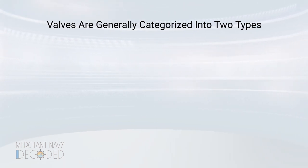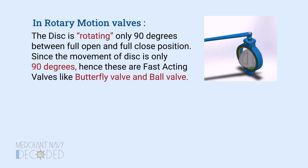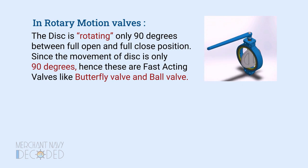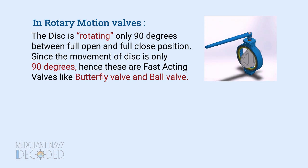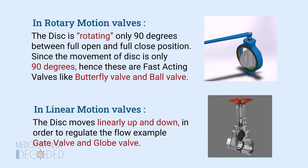Valves are generally categorized into two types: rotary motion type and linear motion type. In rotary valves, the disc rotates only 90 degrees between full open and full close position. Since the movement of the disc is only 90 degrees, these are fast-acting valves like butterfly valve and ball valve. In linear motion valves, the disc moves linearly up and down in order to regulate the flow — for example, gate valve and globe valve.